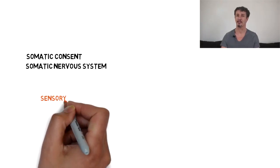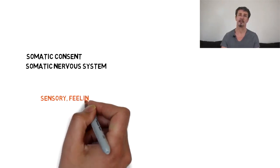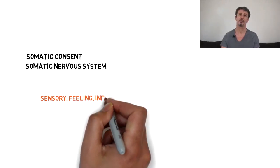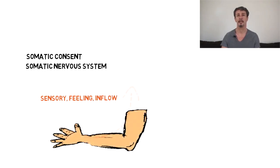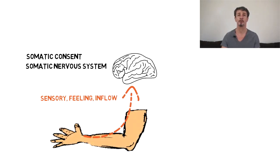Somatic consent also refers to the function of the somatic nervous system. The somatic nervous system is divided in two parts: the sensory division, which governs the input of information from your skin and sends impulses to your brain, allowing you to notice what you feel.